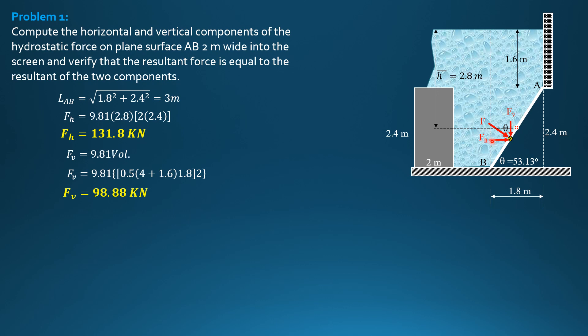So F, the resultant of FH and FV: square root of 131.8 squared plus 98.88 squared is equal to 164.8 kilonewtons.